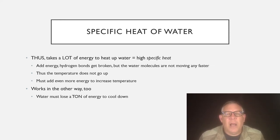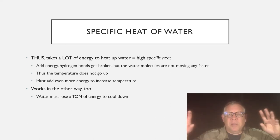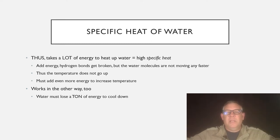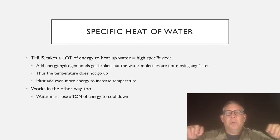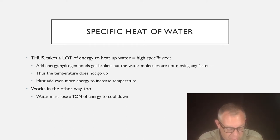The oceans can hold heat — it takes a lot of heat for them to warm up, and then they hold that heat and let it out slowly, so temperatures don't swing as much along the coasts. Many things like that are due to the high specific heat of water.